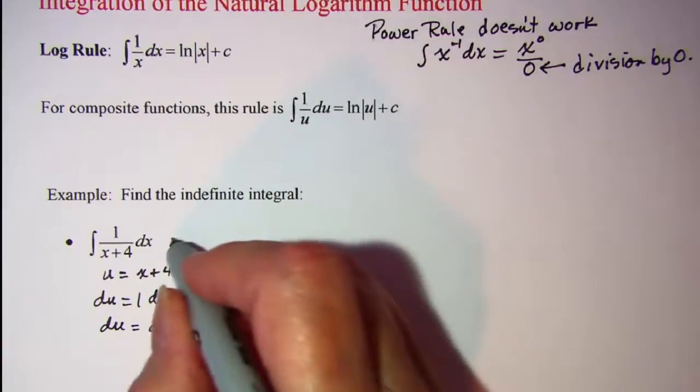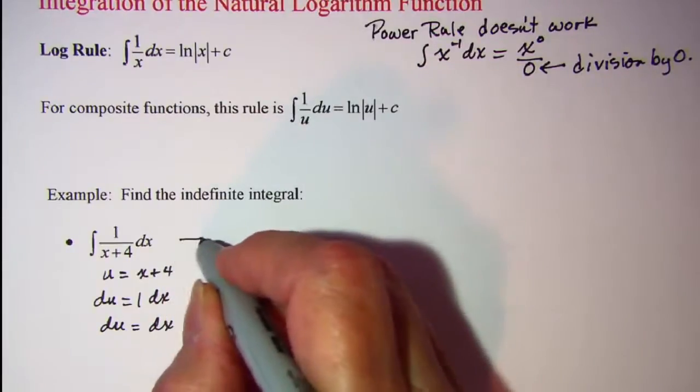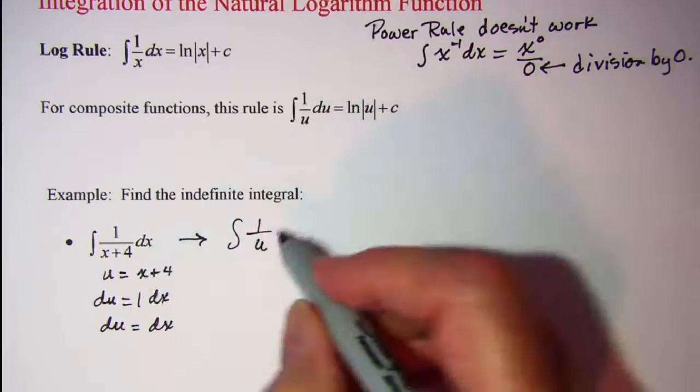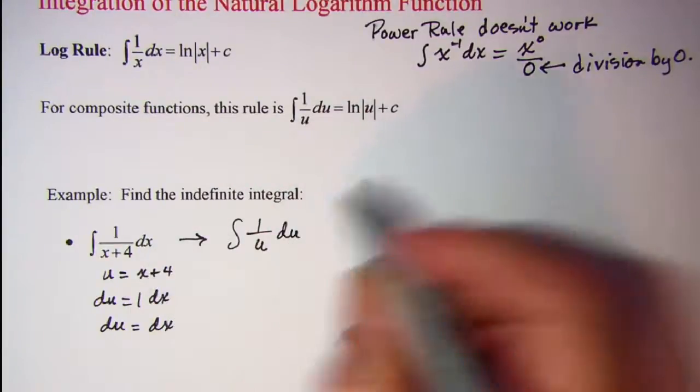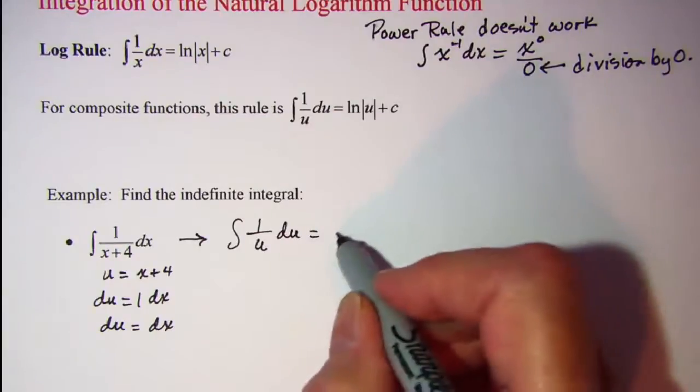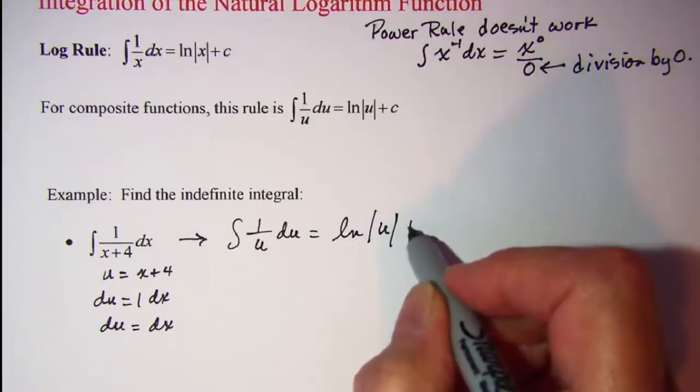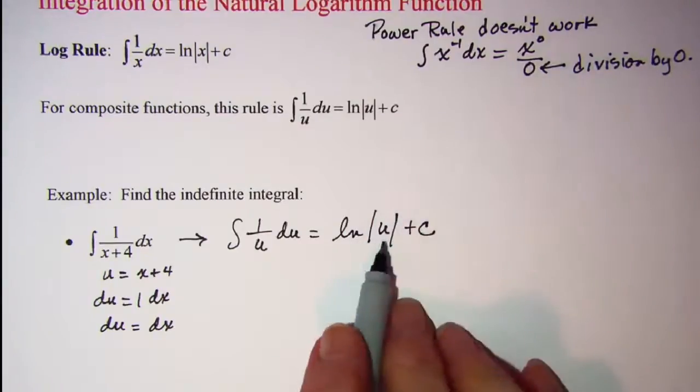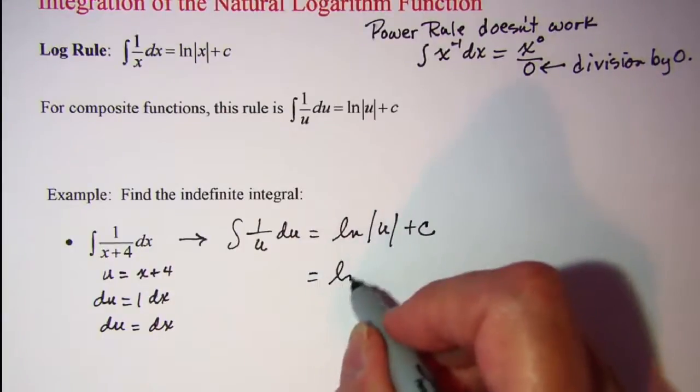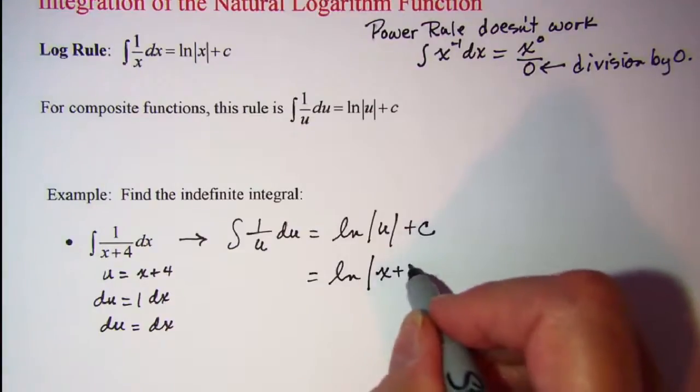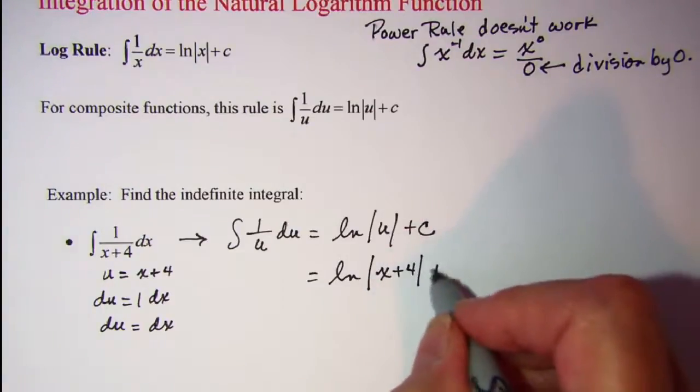This would become the integral of 1 over u, and then dx is du. So we just have ln u plus a constant. And then we have to substitute back in for u, so we would have ln of the absolute value of x plus 4 plus a constant.